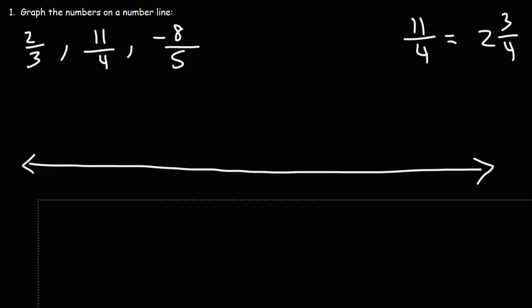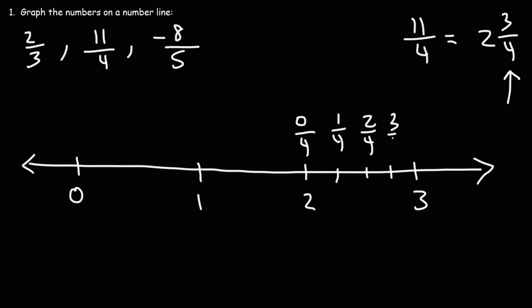So now let's plot 2 and 3 fourths on a number line. We have 0, 1, 2, and 3. Since 2¾ is between 2 and 3, and the denominator is 4, we need 4 equal spaces — so we put 3 lines between 2 and 3. Counting the parts: 0/4, 1/4, 2/4, 3/4, and 4/4. So 2 and 3 fourths is right here, which equals 2.75 as a decimal.